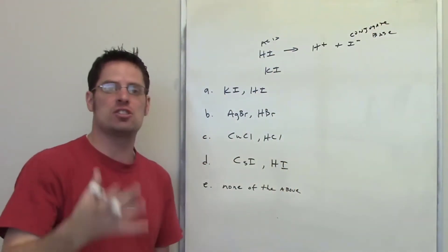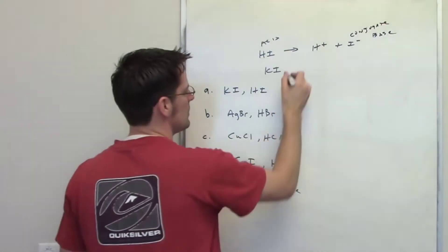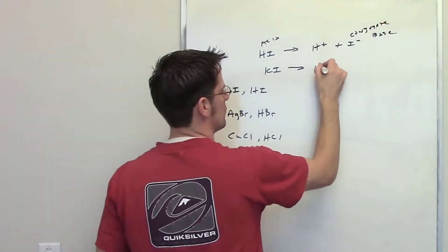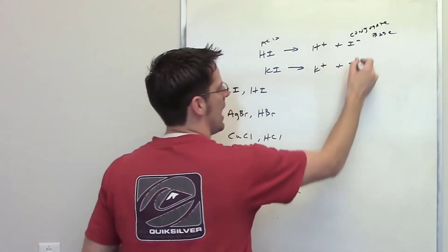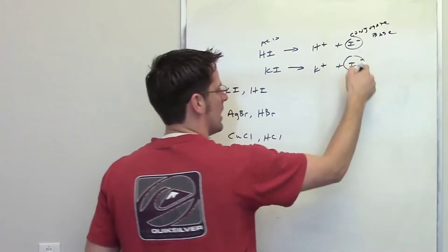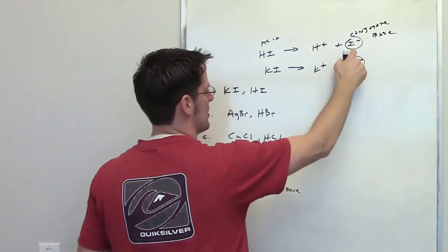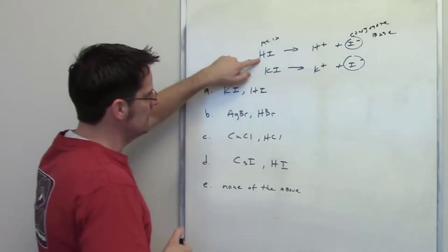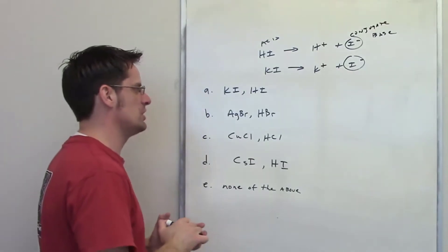KI. Is KI a source of that conjugate base? Yeah, when you throw it in water because KI is very soluble in water it will dissociate to form K plus and I minus. I minus is the same conjugate base as the conjugate base of HI. So this is indeed an acid and a source of its conjugate base.